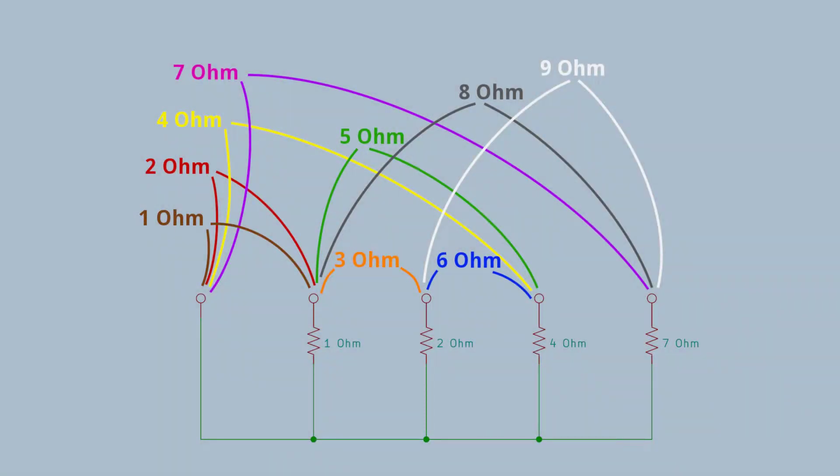First, I decided I need to see what values I need to create 1 to 9 ohms in 1 ohm increments. I know the non-inductive power resistors are a little on the expensive side, so I sure don't want to use 9 of them. With 4 values, I can create 1 to 9 ohms. By using 1, 2, 4, and 7 ohm resistors, I can get my 9 values.